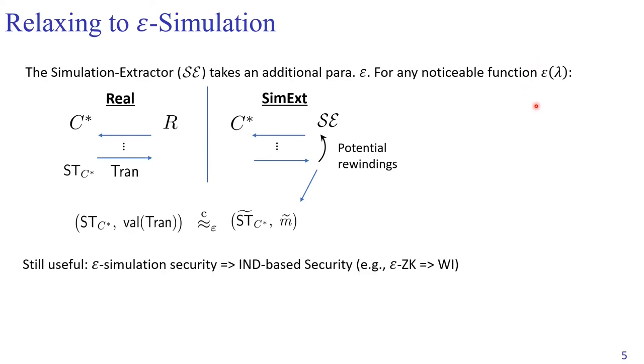I want to remark that this weaker notion of simulation is still useful because epsilon simulation is always sufficient to imply indistinguishability-based or game-based security. Here, a typical example is that epsilon-simulatable zero-knowledge already implies weak indistinguishability.